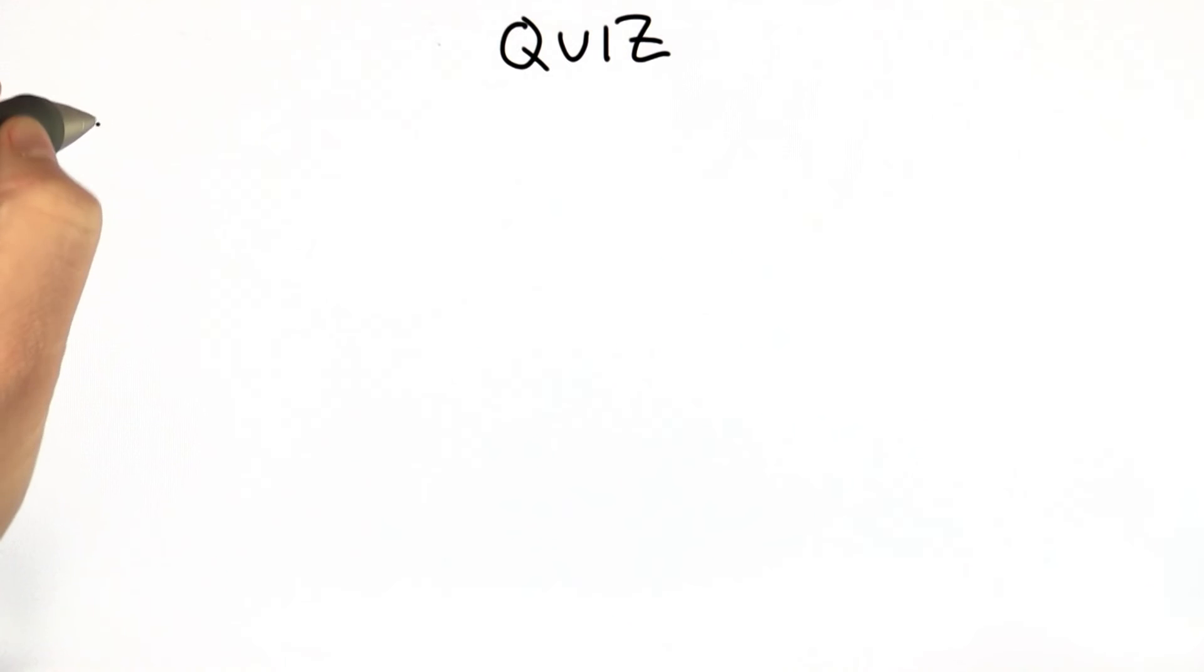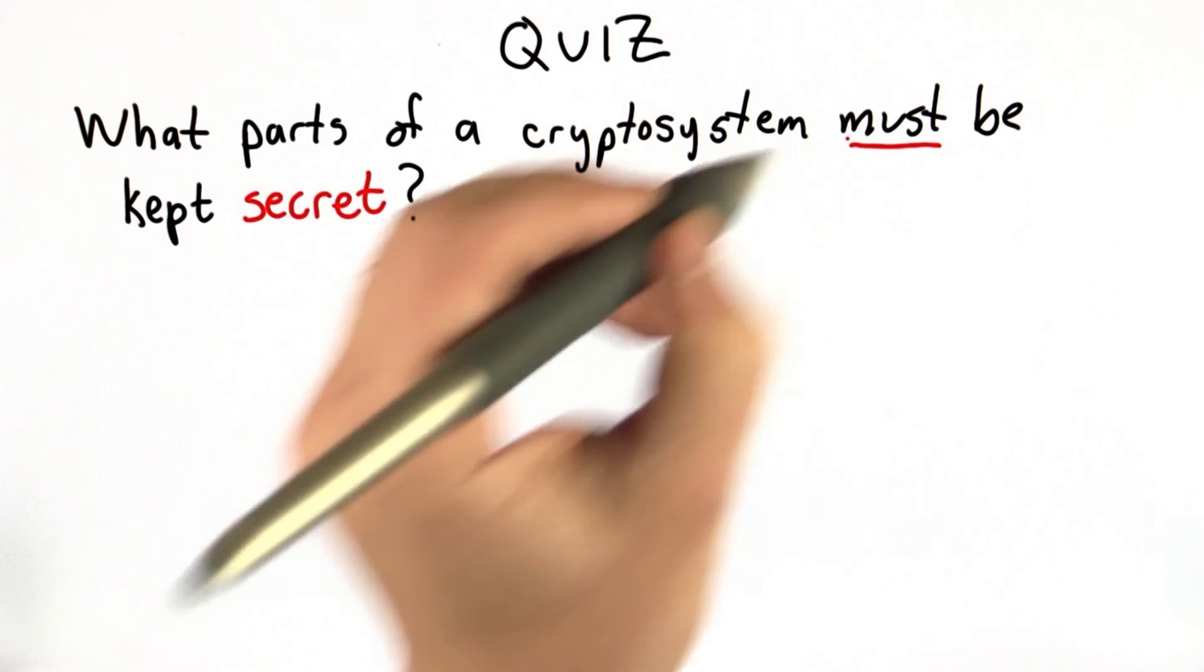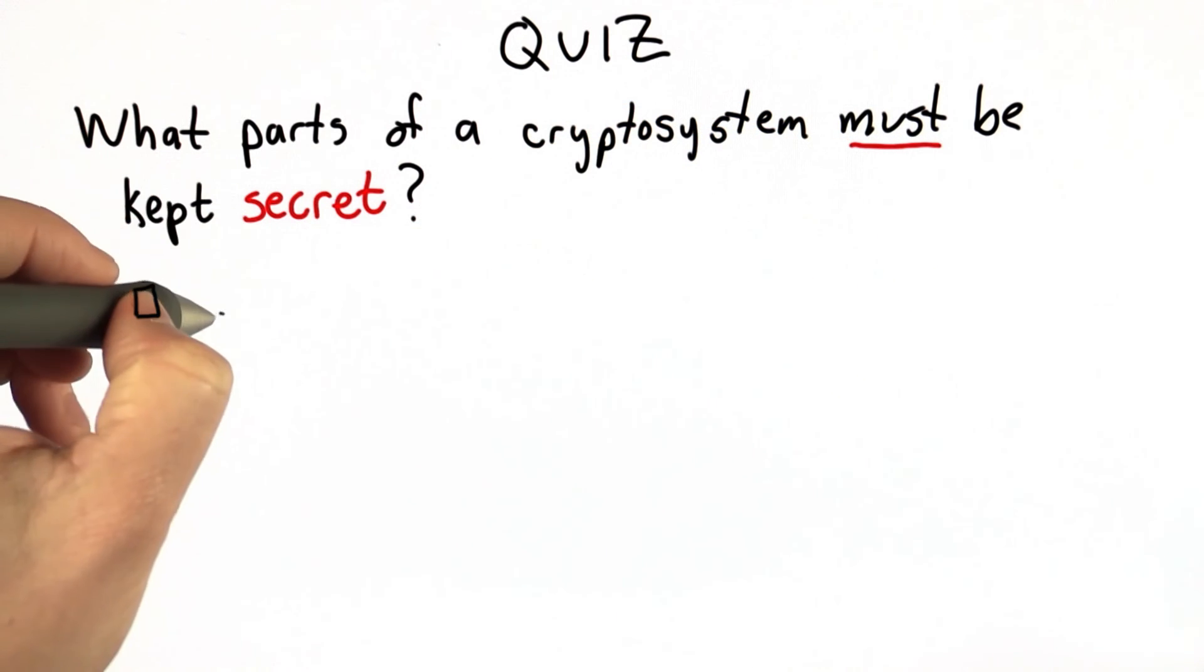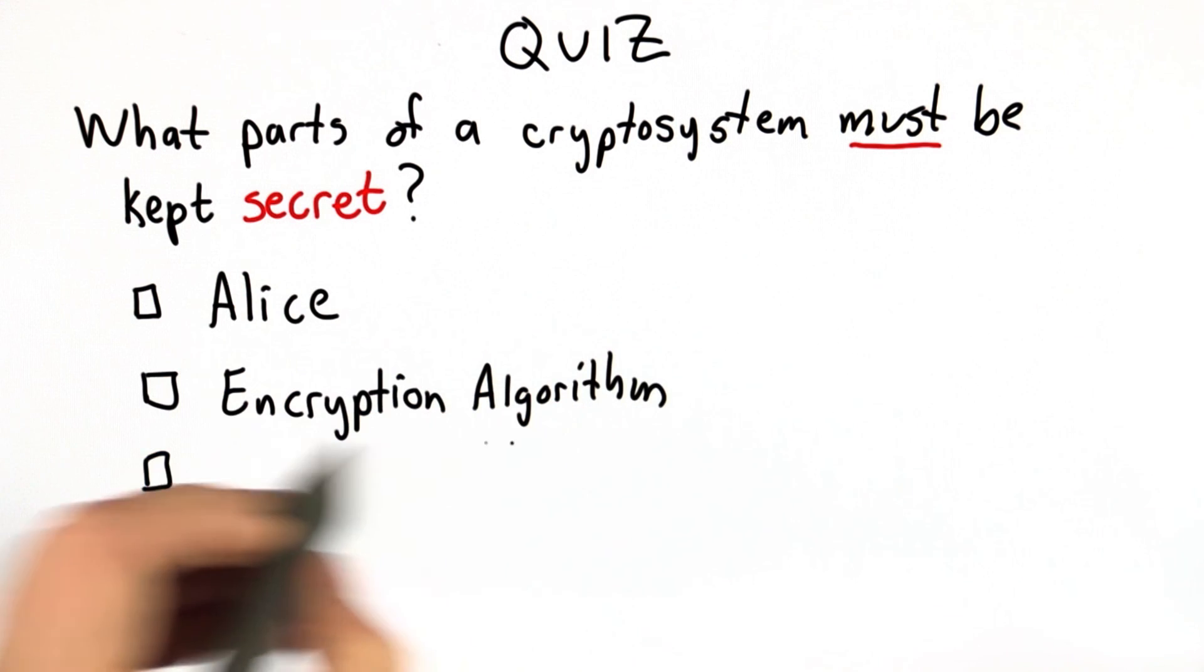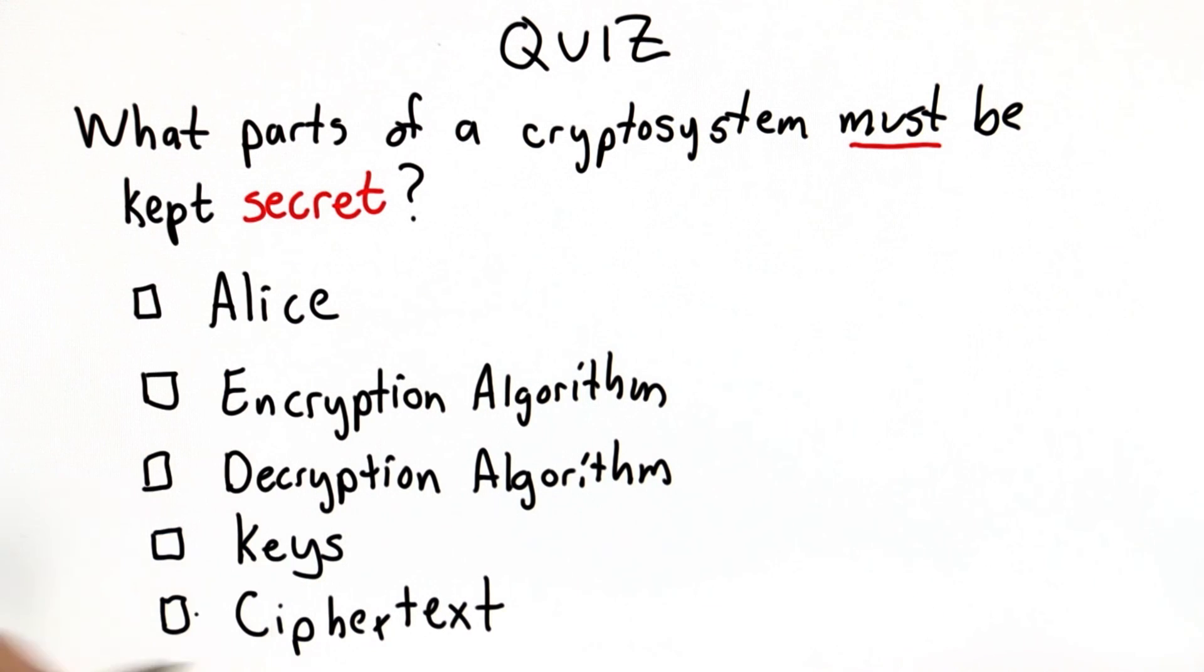So this quiz is to check that you understand Kirchhoff's principle and understand the terms that we've defined. The question is which parts of a cryptosystem must be kept secret? The choices are Alice, the algorithm used for encryption, the algorithm used for decryption, the keys, and the ciphertext. Check all the parts that must be kept secret.